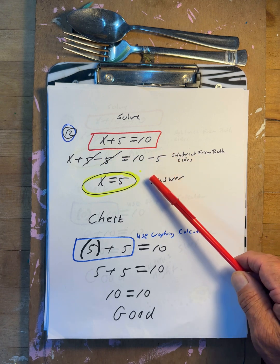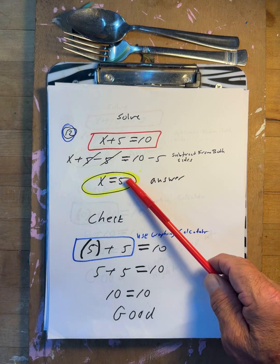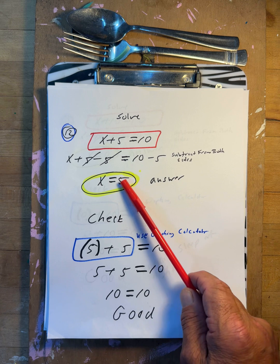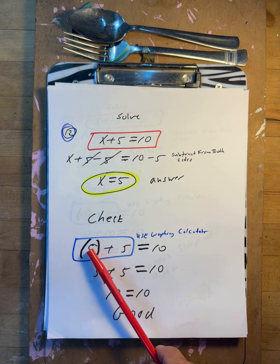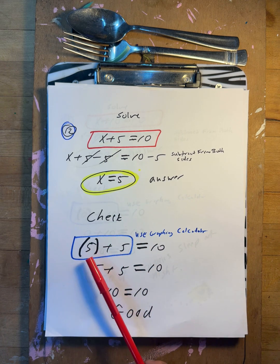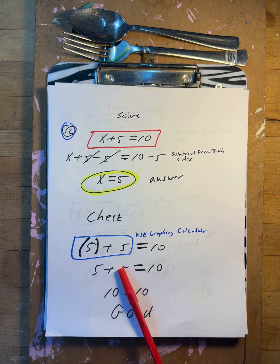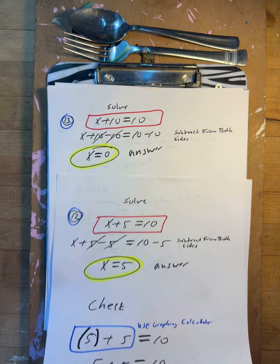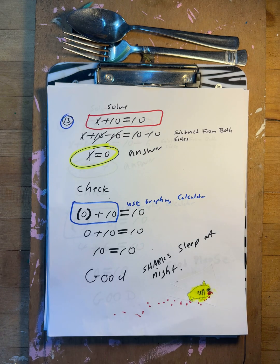x plus five equals ten. Minus five, minus five. So x equals five. Check it: five plus five — take parentheses off — five plus five is ten. Ten equals ten. Good.